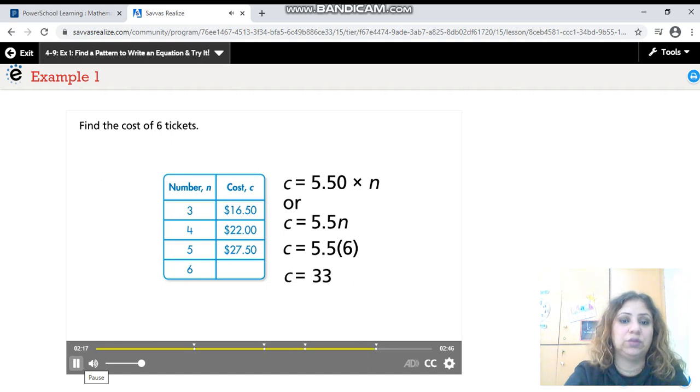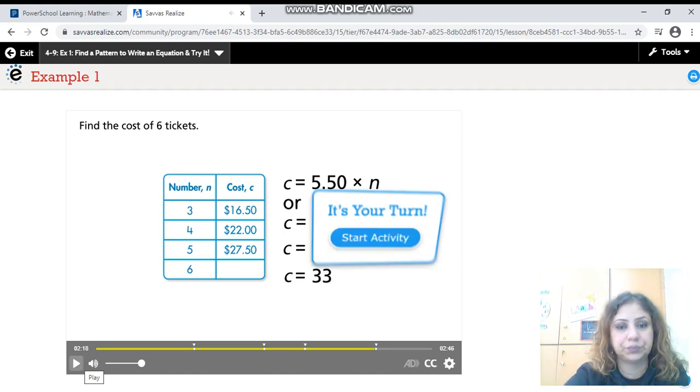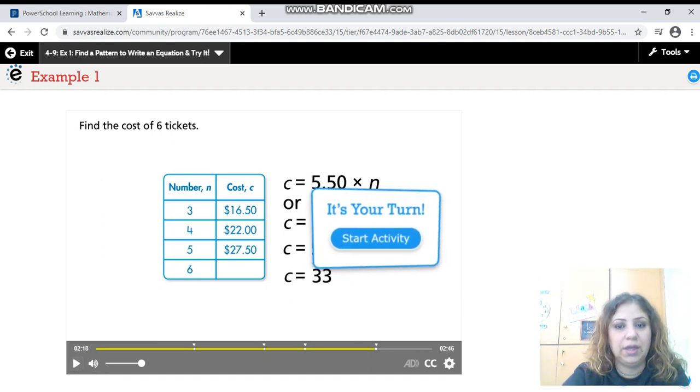So C equals 5.5 times 6, and C equals 33. So the cost for six tickets is $33.